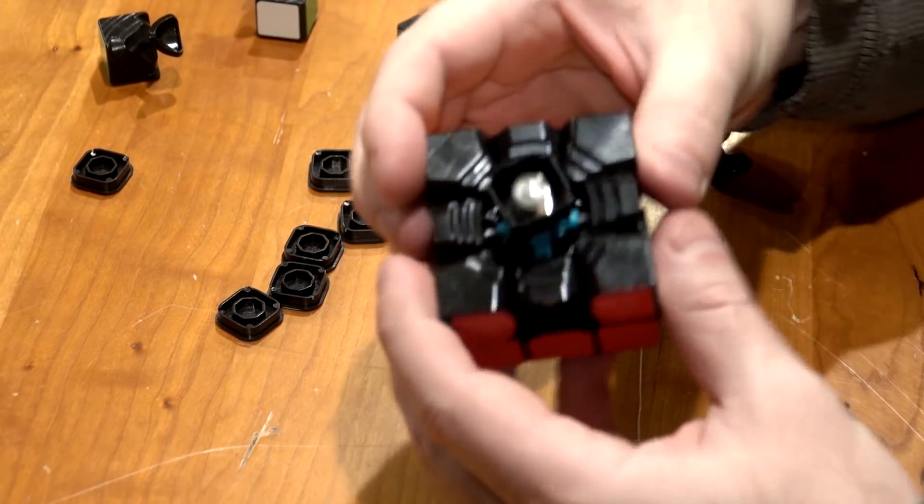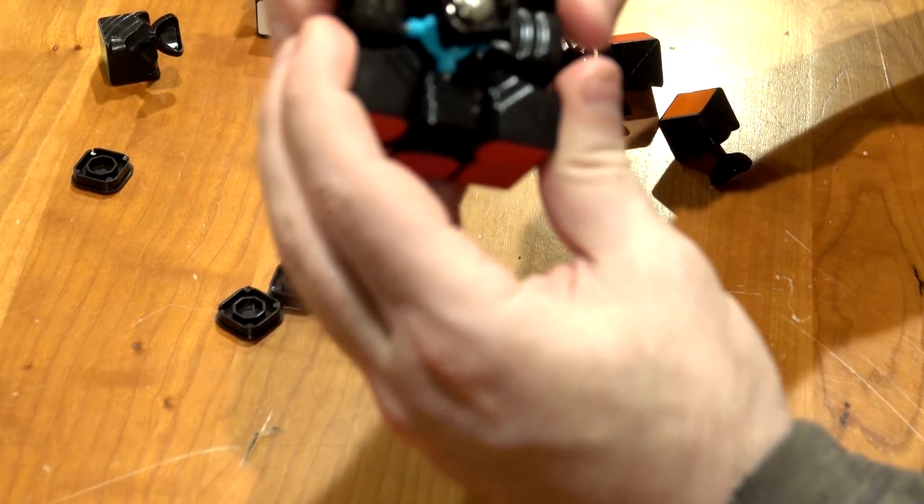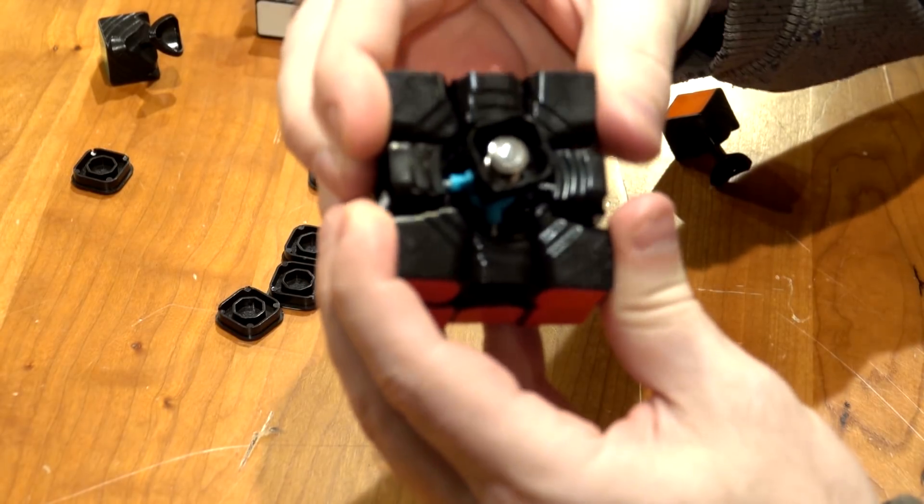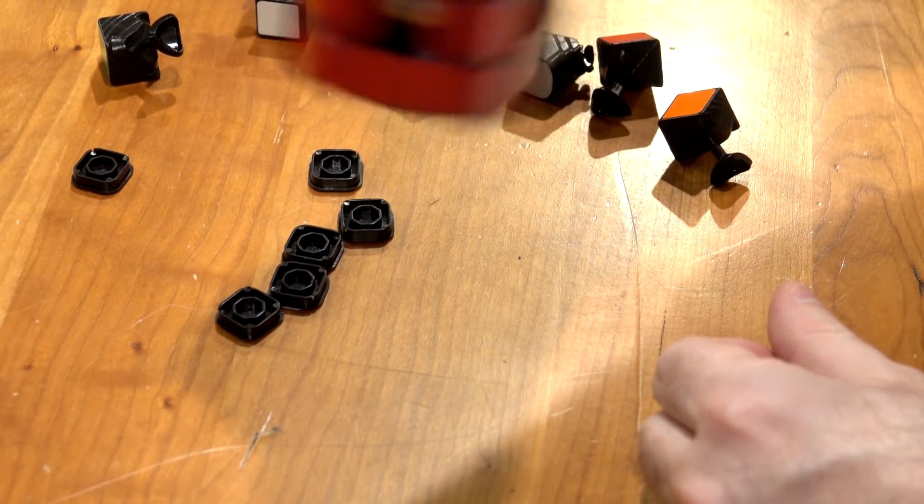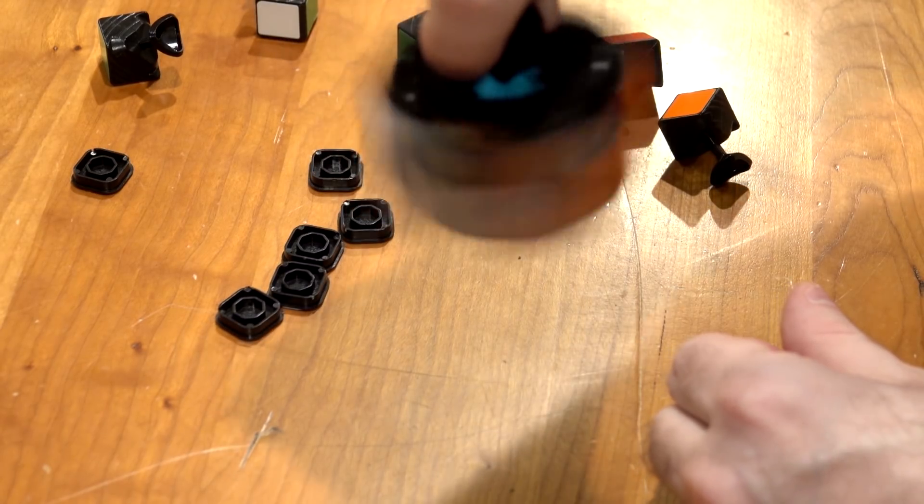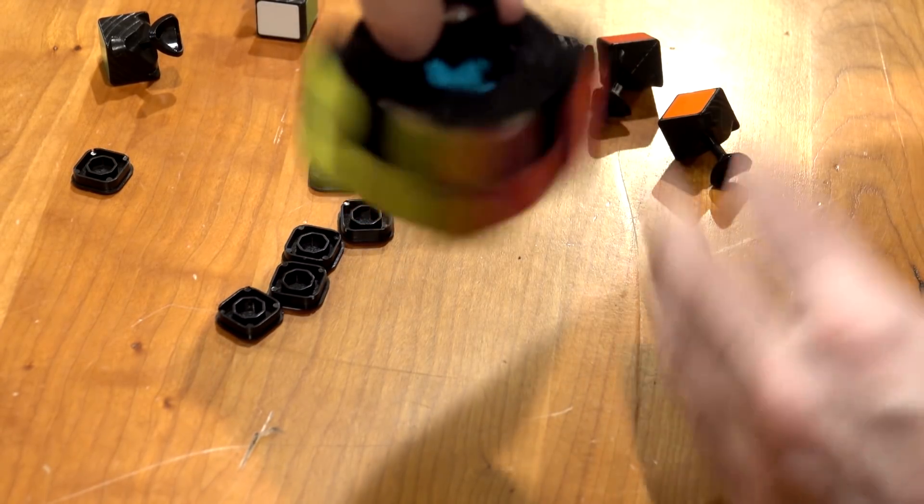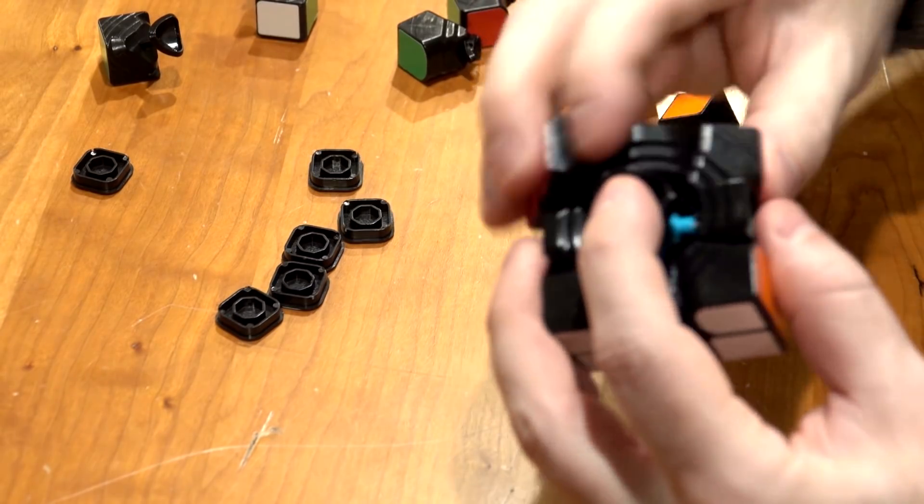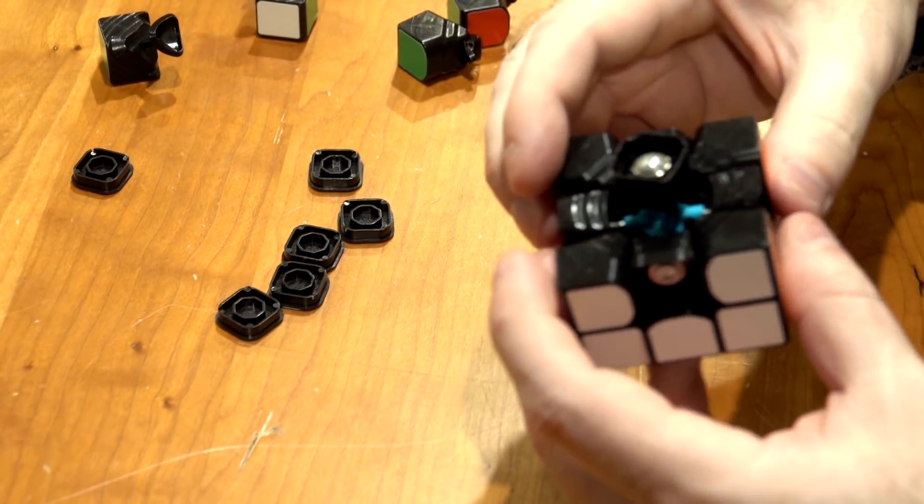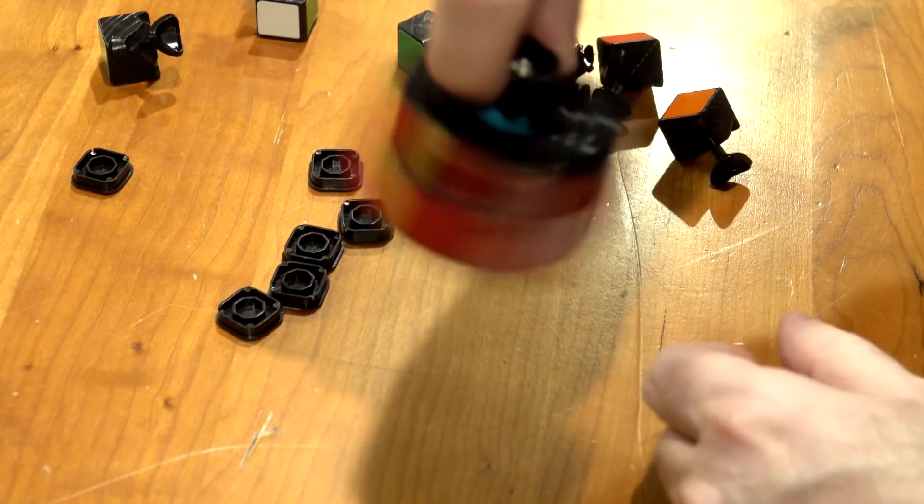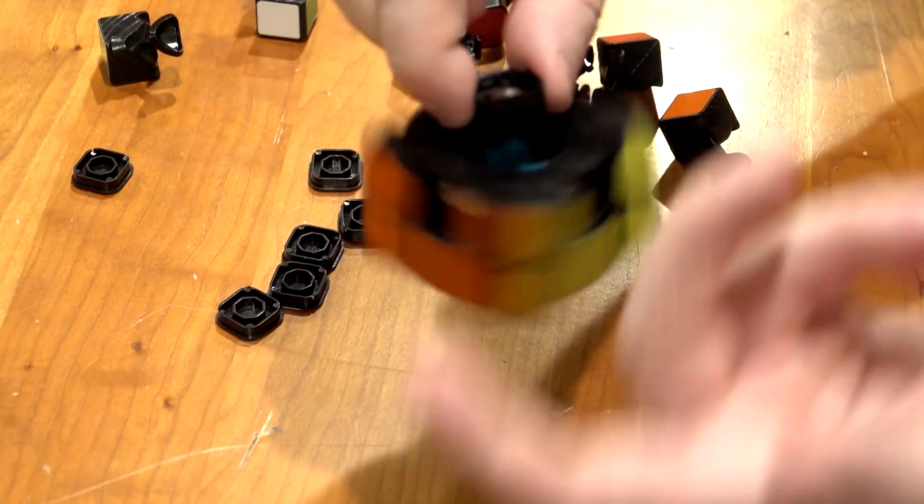I just want to show now there's no springs in here anymore, but you can see it actually still functions just like there are springs. Except you have no friction here on the core, so all that spring resistance is gone. But you still have the regular resistance of the pieces of the puzzle, so it's not just gonna spin freely. You can see just how free that is, there's no spring noise or anything.